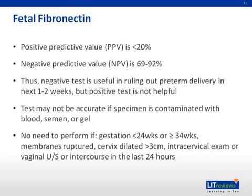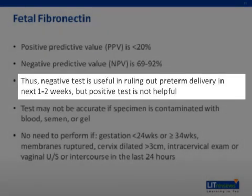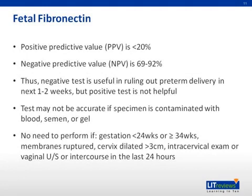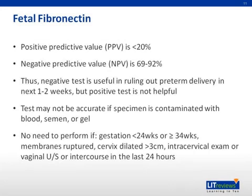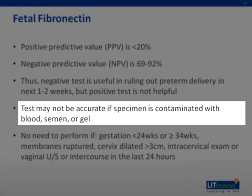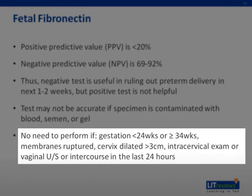Let's return to talk about the fetal fibronectin test. If the fetal fibronectin test is negative, there is a 69% to 92% chance that the patient will not go into preterm labor in the next one to two weeks. In other words, a negative fetal fibronectin is reassuring in that your patient probably won't go into preterm labor. However, the positive predictive value of fetal fibronectin is less than 20%, so a positive fetal fibronectin doesn't tell you with much certainty if your patient really is in or will go into preterm labor. The important point is that fetal fibronectin's clinical value is in its negative predictive value. Furthermore, the test will be contaminated and not useful clinically if the specimen is contaminated with blood, semen, or gel, or if there is a history of any foreign object in the vagina within the last 24 hours. Finally, fetal fibronectin is only performed between 24 and 34 weeks of gestational age.